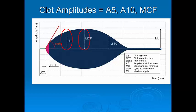The amplitude or clot strength is measured at a number of different time points. MCF stands for maximum clot firmness; however, this usually occurs around 30 to 40 minutes, and in most clinical situations you want to be able to make a decision before waiting this long. Most algorithms now use A5 or A10 — the amplitude at 5 or 10 minutes.